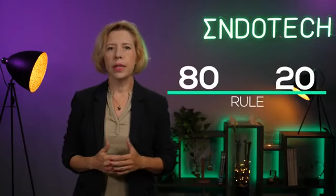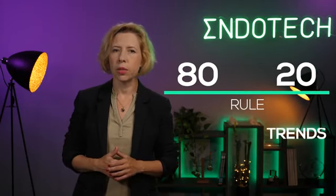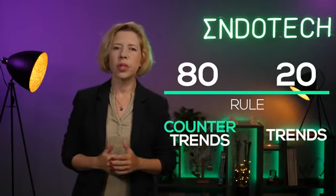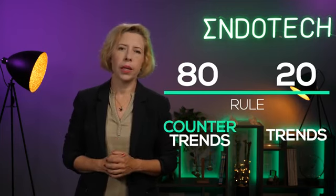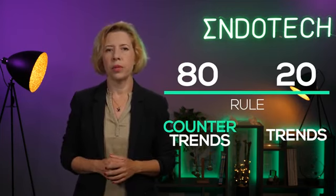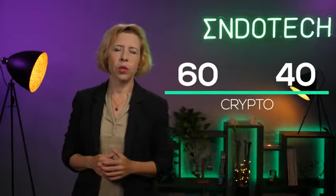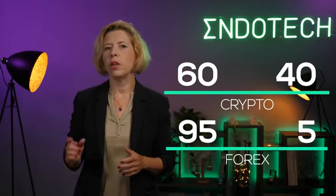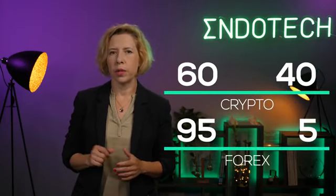There is a standard 80-20 rule that says markets trend about 20% of the time and spend the other 80% grinding through trading ranges, pullbacks, and other counter-trend actions. In crypto, there are 30-40% trend moves, while in forex there are only 5-10% of trends.